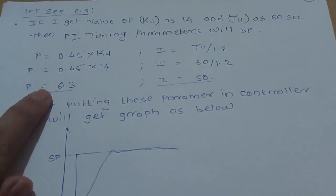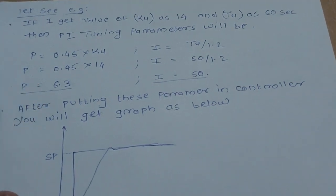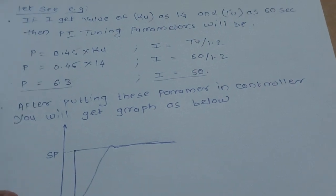The final value of P, that is proportional, will be 6.3. Similarly for I, the integral value will be Tu divided by 1.2, that is 60 divided by 1.2, so it will be 50.